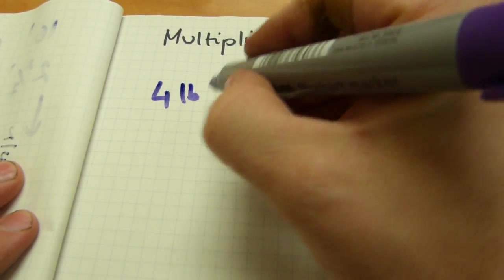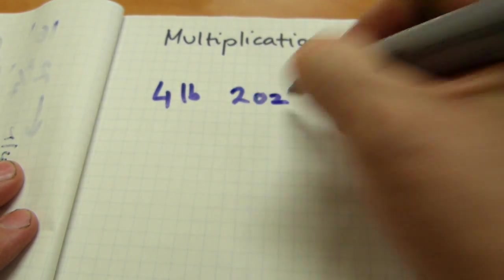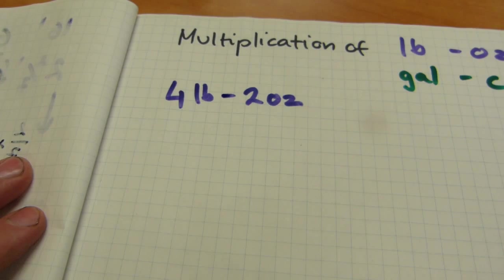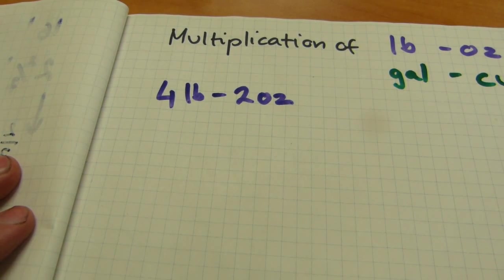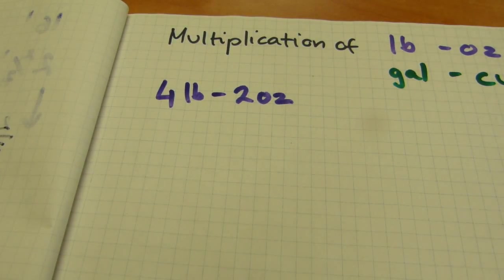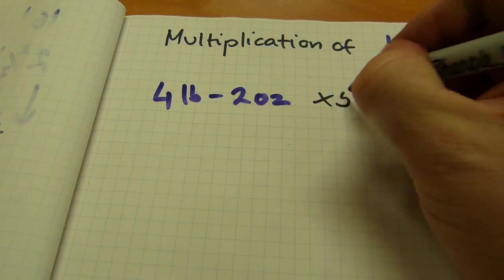Four pounds and two ounces is an easy number and that's how measurements are written. And if you see a dash between them, that's just a dash and not a subtraction. Okay, so let's multiply this number by five.